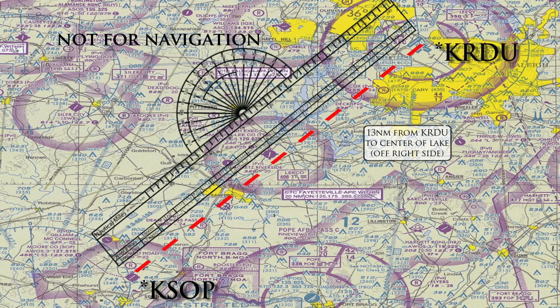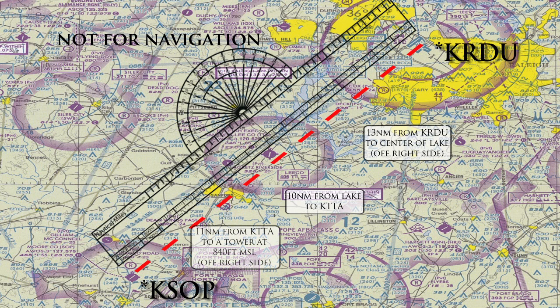From the lake, our next checkpoint is going to be Raleigh Exec. If you're going the right way, it shouldn't be difficult to miss an airport right in the middle of your flight path. Once we pass Exec, there aren't too many other landmarks in the area, so we're going to have to use some intersecting roads that you can see on the sectional. In addition to the roads, just to make sure we are headed the right way, there should be an antenna off to your right extending from the surface up to 840 feet MSL. Next stop: Moore County Airport.